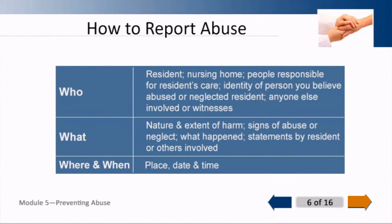How to report: who to report is going to be the resident — the resident can certainly call. The nursing home, people responsible for the resident's care like the durable power of attorney or their family. You should indicate the identity of the person that you believe abused or neglected the person, and anyone else that may have been affected, and any witnesses. What is the nature and extent of the harm — make sure that you're not just reporting physical harm, but signs of abuse or neglect. What happened — statements by the resident and others. It's vital that you ask the elder right away what happened. And then you're going to tell the date, time, and place.